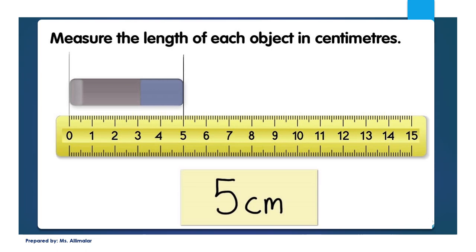Okay, measuring the length of each object in centimeters. When you want to measure using your ruler, always remember the beginning of the object must be placed directly at zero. I know we already learned this, but I will just recap.